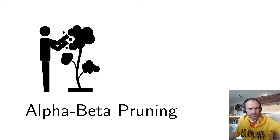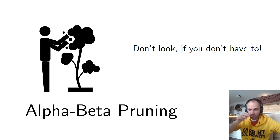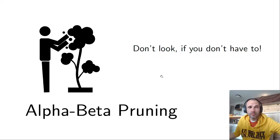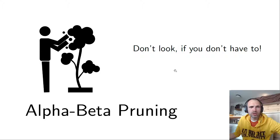Now that we know minimax, there is alpha-beta pruning. It's very simple: don't go into subtrees or branches where you don't need to evaluate. As you've seen in the previous assignment, there are some nodes you don't need to evaluate, so just skip them — that's all alpha-beta pruning does. It runs minimax and skips those branches where evaluation is unnecessary. In this course we won't go into alpha-beta pruning in depth because we have a slightly different emphasis.